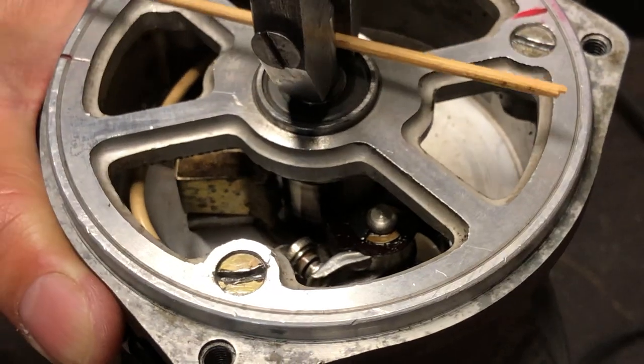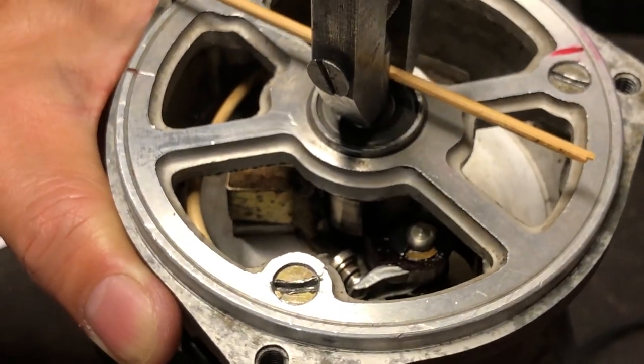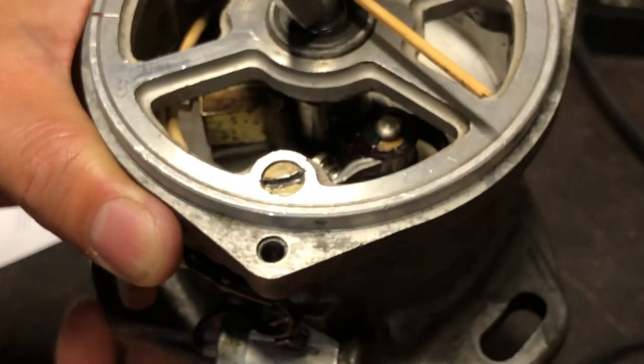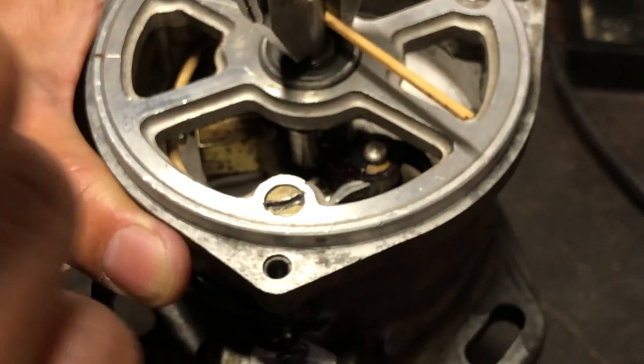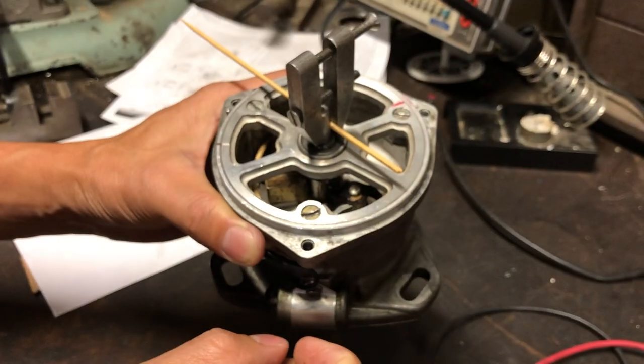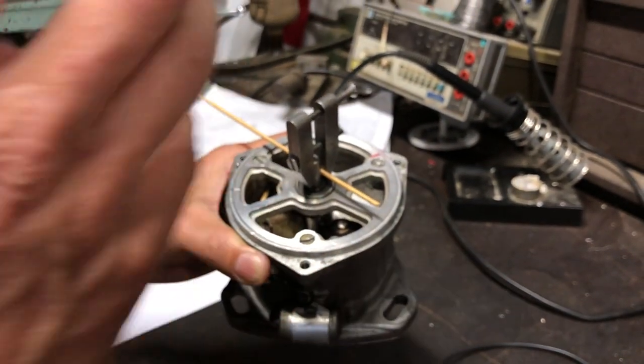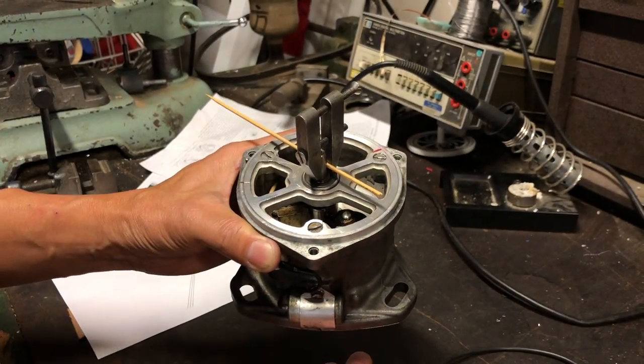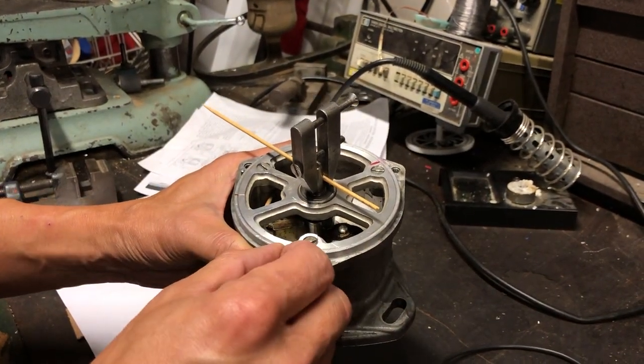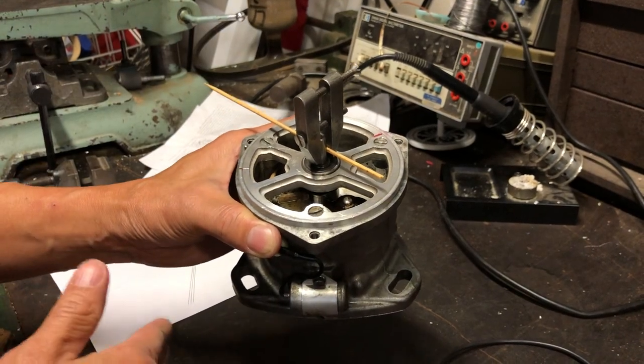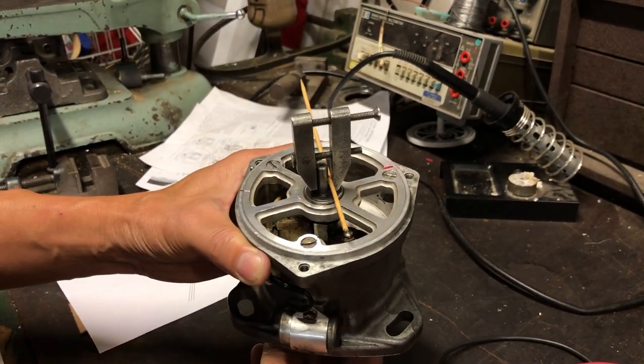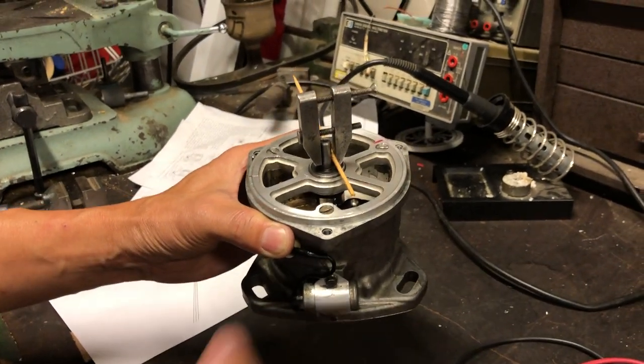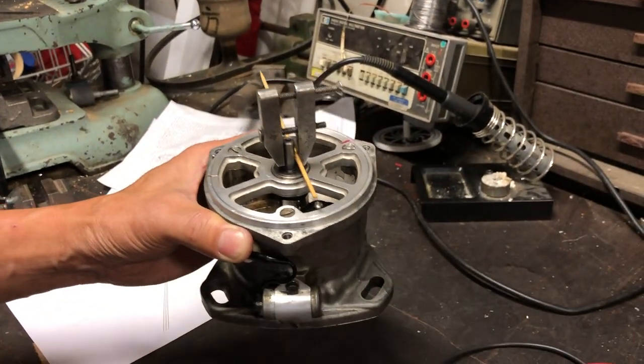It opens and closes the points, and the lobe has three high spots. So it opens these points up every 60 degrees, and in the manual, it says you have to set these up. The points are a circuit that gets completed to make the spark happen. The ignition coil gets charged up when the points are closed. Current flows through one side of the ignition coil. Once the points open, then it shorts out the electricity and that causes a large spark jump to the other coil.